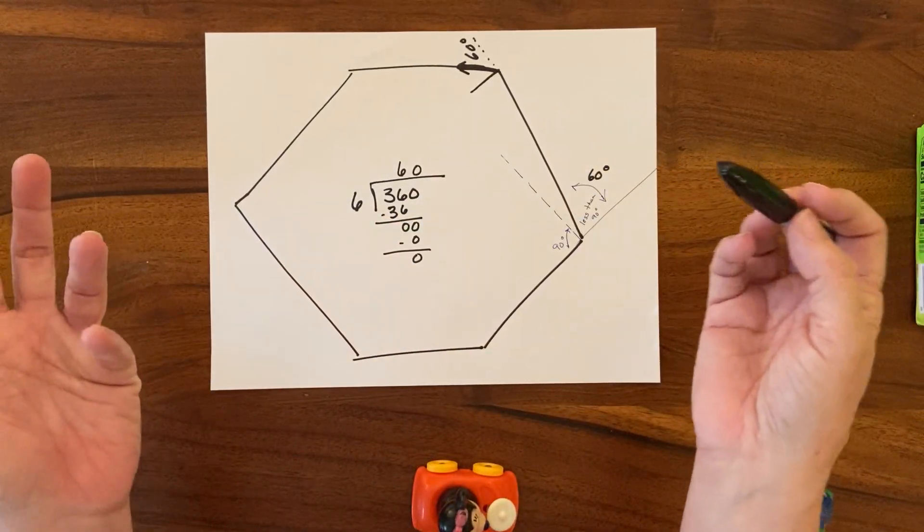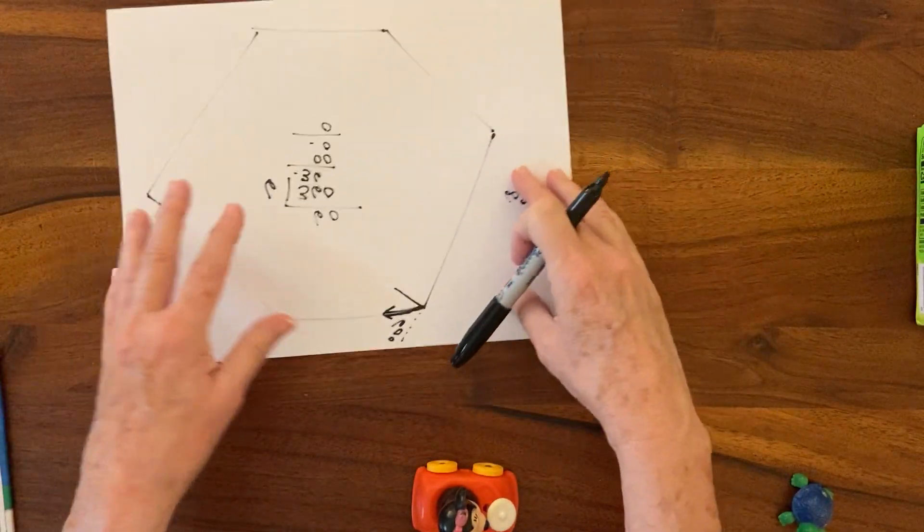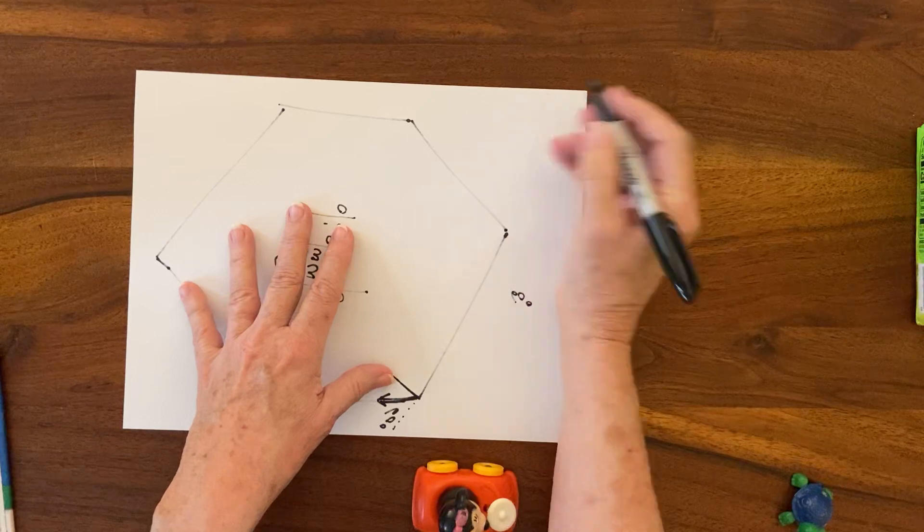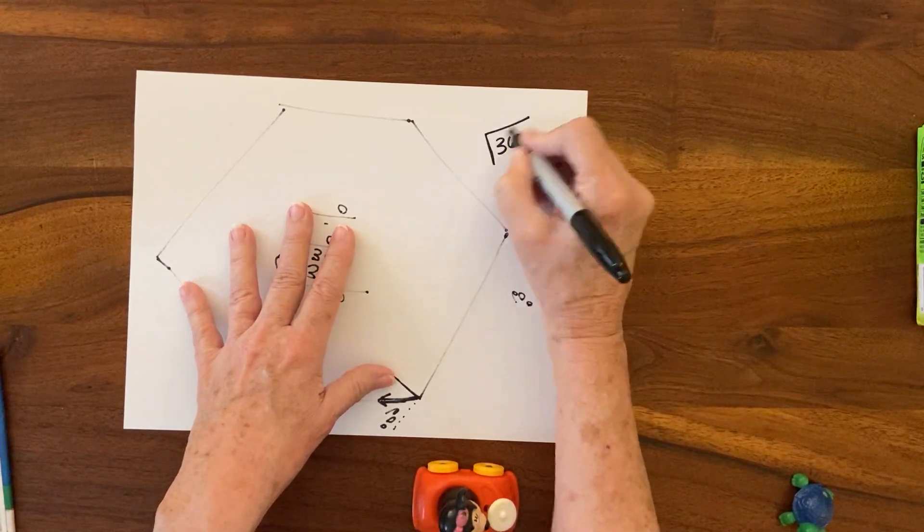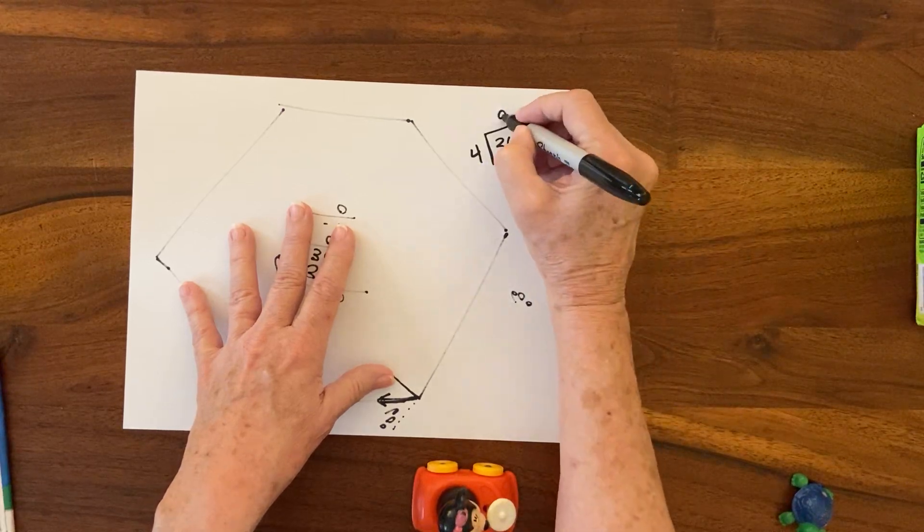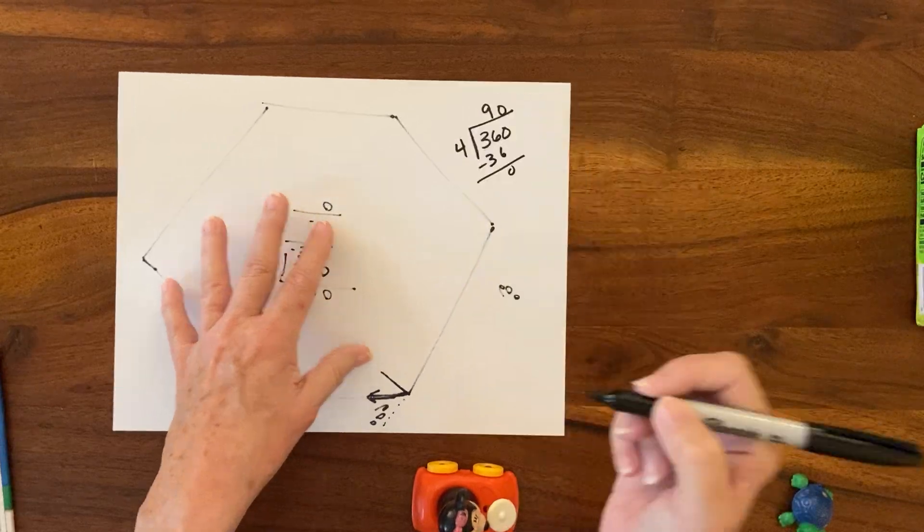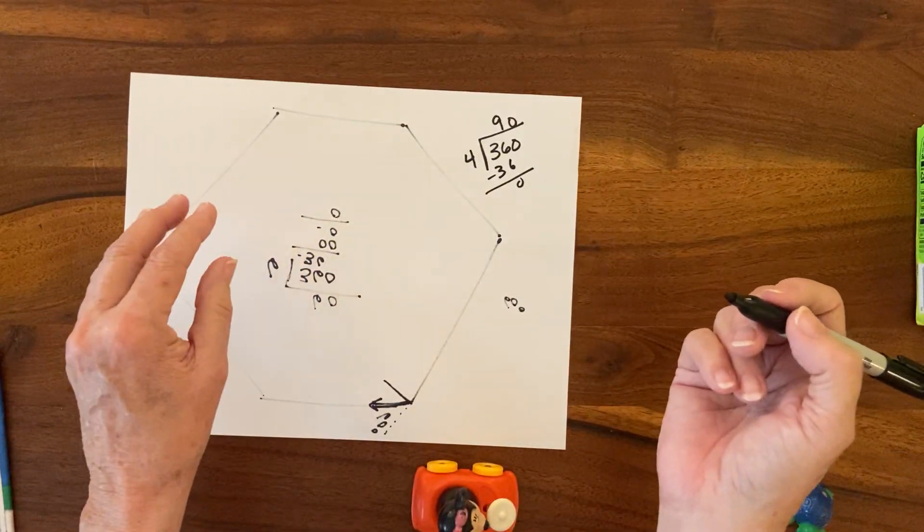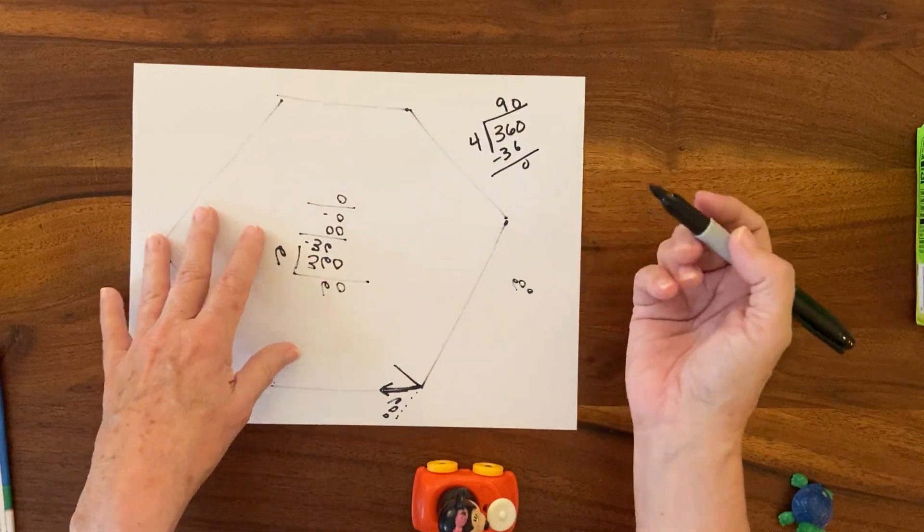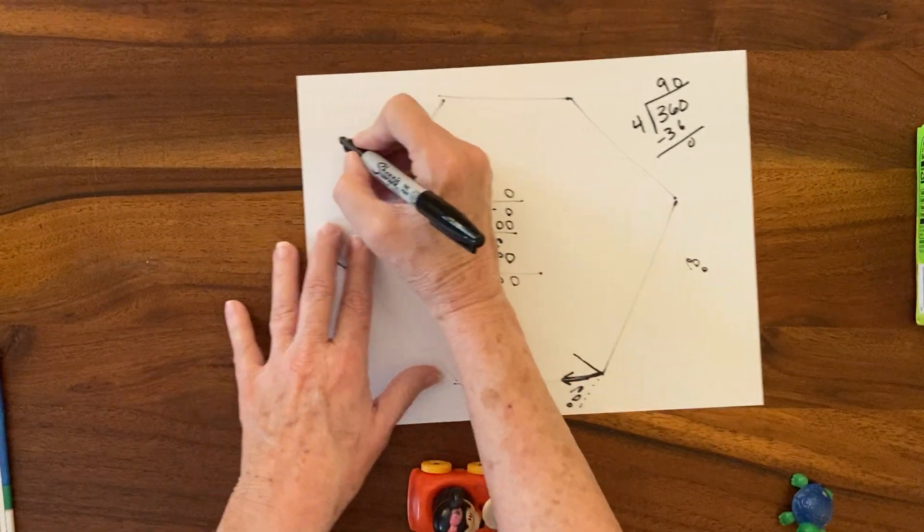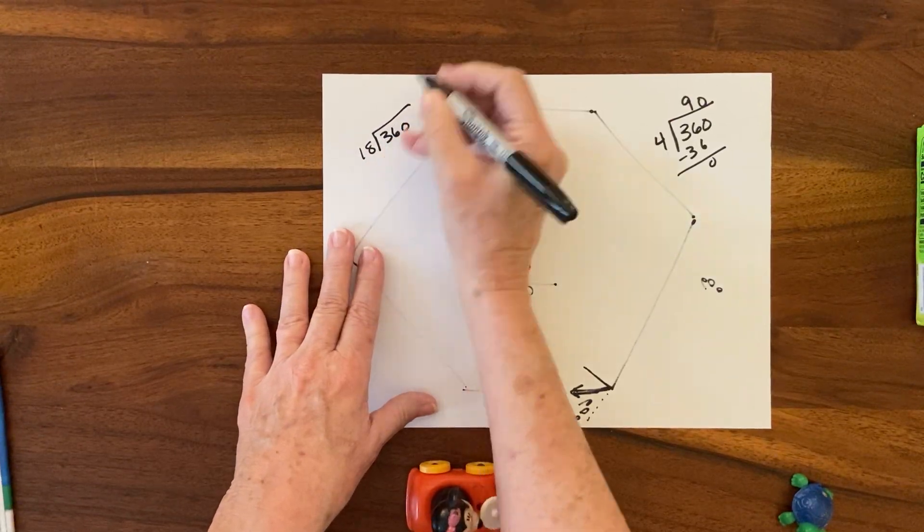Let's say somebody did four turns. 360 degrees total, they have four turns—each turn is going to be 90 degrees. If they had 18 turns, 360 divided by 18, each turn would be 20 degrees. That would be a lot of turns, but it might happen.